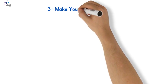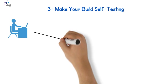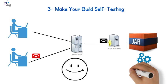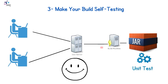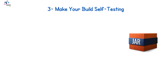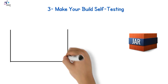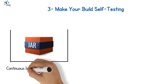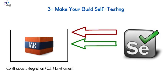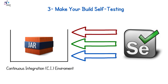3. Make your build self-testing. Here comes the role of unit testing to automatically determine if the code in the build is working — and not breaking the compilation — and to ensure changes from one developer are not killing another developer's changes. Another way of testing the just-created build is to deploy it in a continuous integration (CI) environment and fire Selenium or functional tests to test certain functionalities to make sure the system is well-behaving and the build is correct.